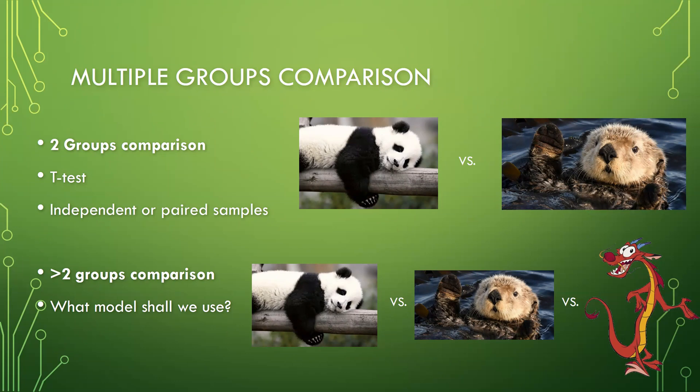How about comparing more than two groups? For example, if I want to compare the sleep duration among panda, otter, and Mushu — WuLang's pet dragon — I cannot use t-test in this scenario. There are two options I can choose: one option is ANOVA, and another is MANOVA.